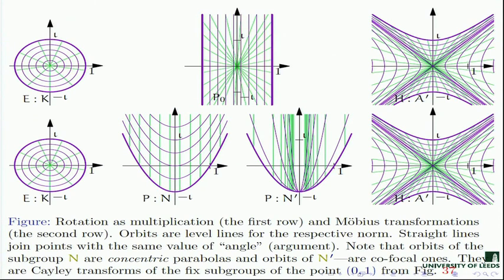The advantage of the Cayley transform is that it diagonalizes the action of the corresponding fixed subgroup for the imaginary unit. The Cayley transform of any type sends the imaginary unit to zero, and after the Cayley transform the action of this subgroup becomes a rotation.